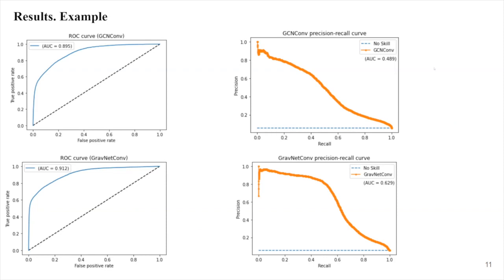Here are results from one of the experiments. On top we have the graph convolutional layer — the so-called default convolutional layer. We don't use accuracy here; instead I use the ROC curve and precision-recall curve, specifically the area under the curve, or AUC. This metric ranges from 0 to 1 and shows how good your classifier is. For the ROC, the no-skill value is 0.5. For the regular convolutional layer I got 0.895, and for the graph net layer I got 0.912, so a little bit better. The precision-recall AUC also ranges from 0 to 1, but the no-skill value there represents the fraction of signals, which is about 7%, so around 0.07.